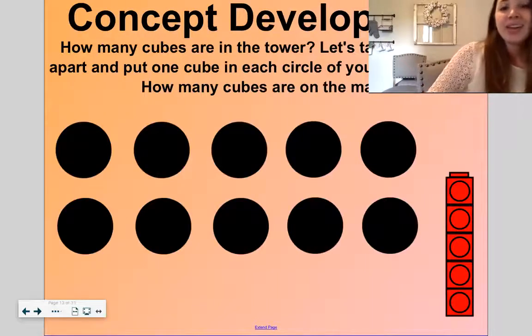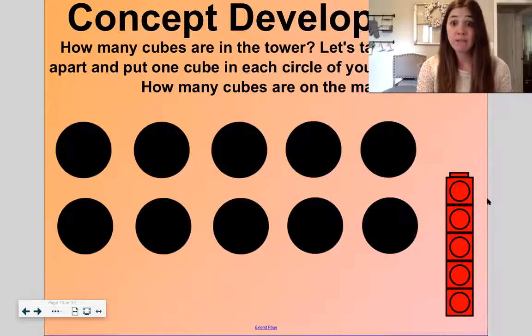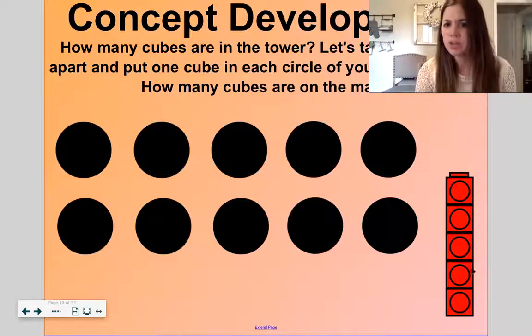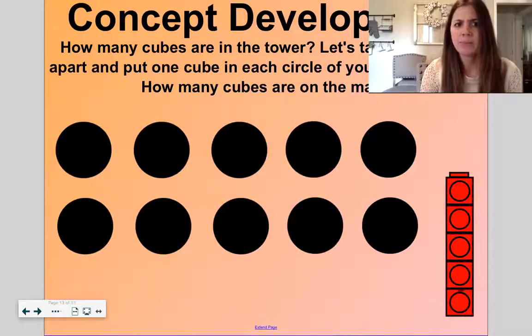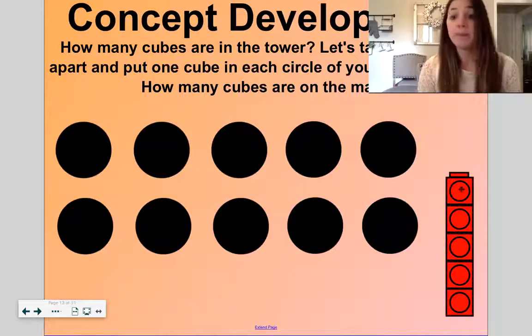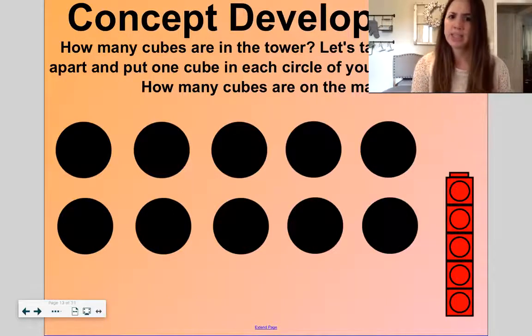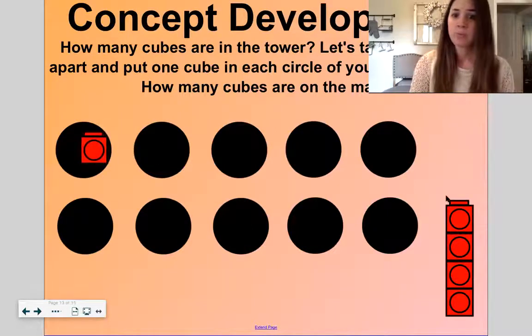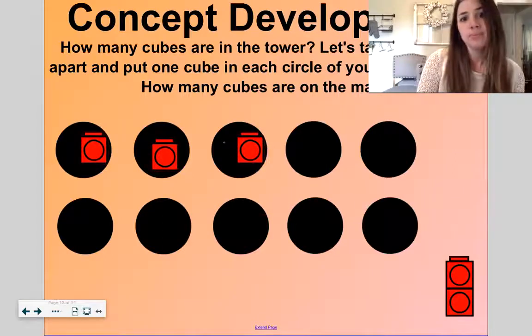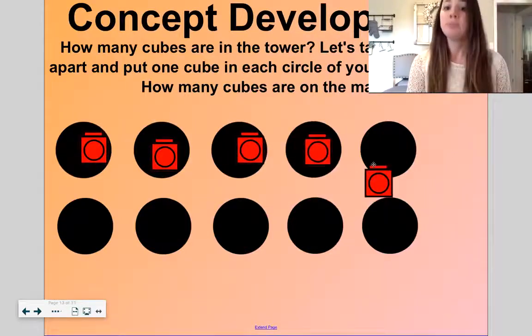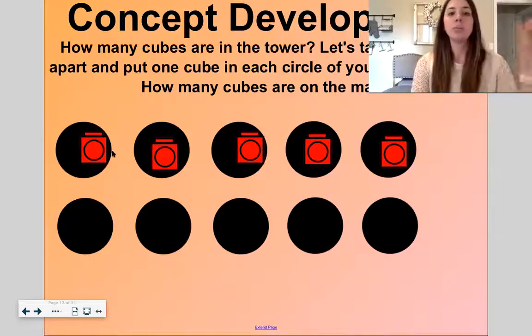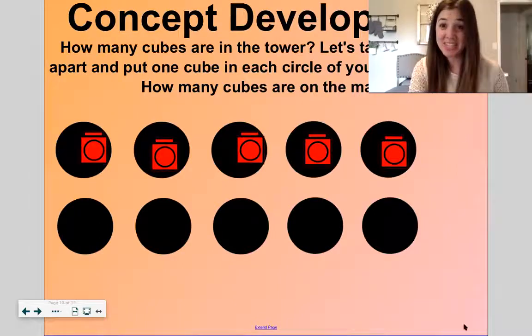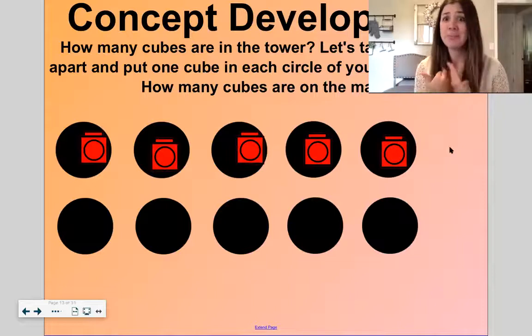Now here is our concept development. We have two rows of five. These are five groups. We have two five groups. So we have ten total. How many cubes are in this tower? Count with me. One, two, three, four, five. Now it's kind of a different way. Let's take the tower apart and put one cube in each of the circles. I did it. I put one cube in each circle. How many cubes are on the map? Five. We just counted the tower of five. There's still five. Even though we took it apart, there's still five.